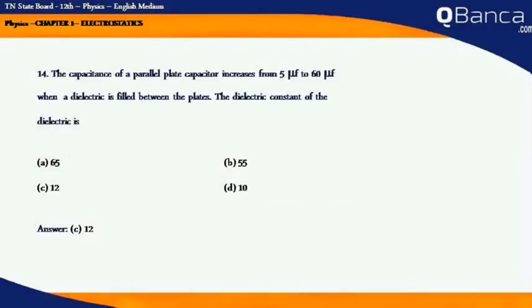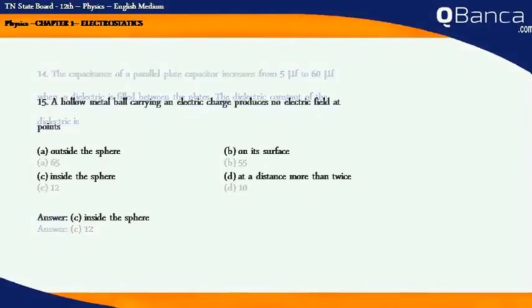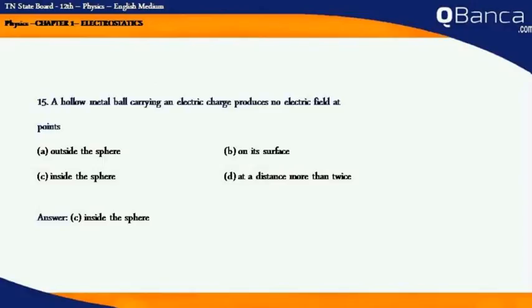The capacitance of a parallel plate capacitor increases from 5 mu F to 60 mu F when a dielectric is filled between the plates. The dielectric constant of the dielectric is. Answer: 12. A hollow metal ball carrying an electric charge produces no electric field at points. Answer: Inside the sphere.